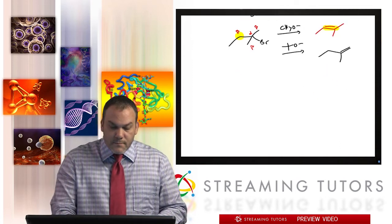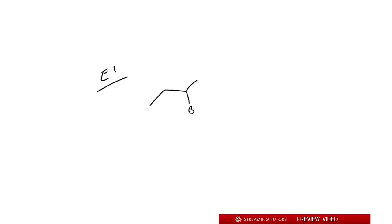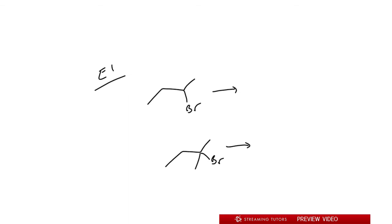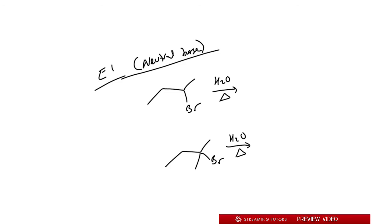For E1, you would have a secondary or tertiary alkyl bromide and use a neutral, weak base — like water. You'll get SN1 and E1, but to get predominantly E1 you increase the temperature. Higher temperature favors E1. When you do E1, the leaving group leaves first forming a carbocation, then elimination goes to the beta carbon with fewer H's — it always favors Zaitsev.